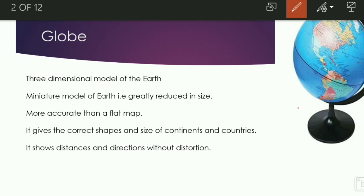What is a globe? A globe is a three-dimensional model of the Earth. A globe is a miniature model of the Earth that is greatly reduced in size. It is a true representation of the Earth.